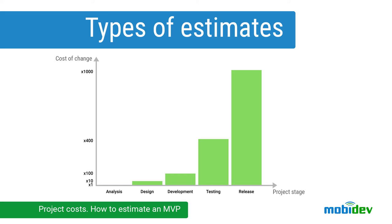So which approach should be chosen? It's the decision of every product owner. One thing can be said for sure: the more precise the requirements, the more precise the estimate, which allows optimal budget planning. The earlier requirements are defined, the simpler and cheaper they may be implemented.